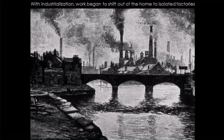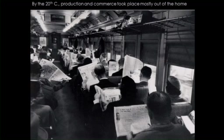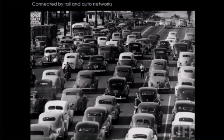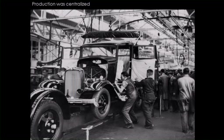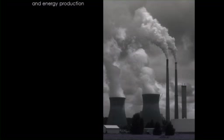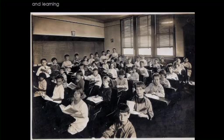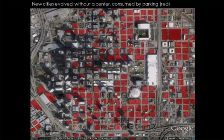With industrialization, things began to get distributed. You had production going out to factories; they were often dirty and noisy, and so most commerce and production began to take place out of the home. You had networks of rails and highways connecting all of these distributed places to where people lived. Production was centralized, energy production was centralized, health care was, learning was.